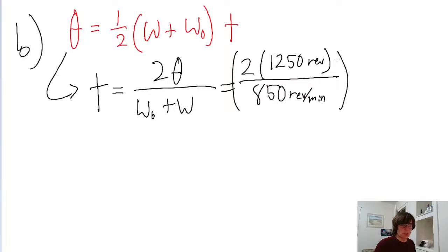And then to get this in seconds, we convert from minutes to seconds. So that's 60 seconds per 1 minute. And if we put all this into a calculator, then we get a time interval of about 180 seconds.